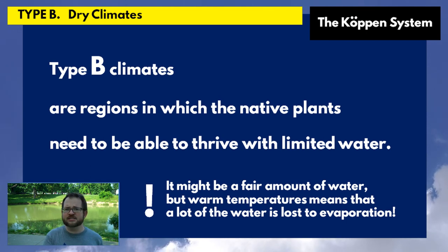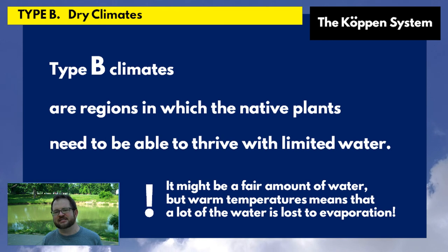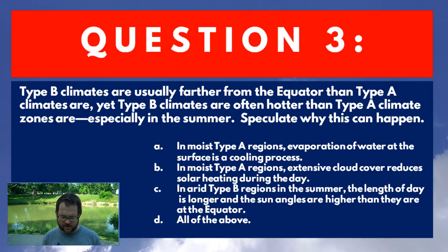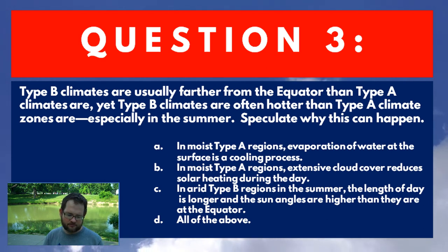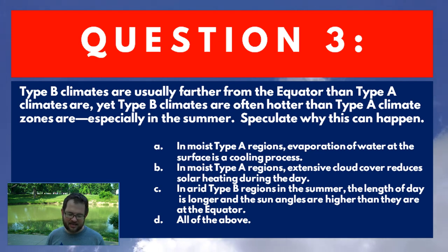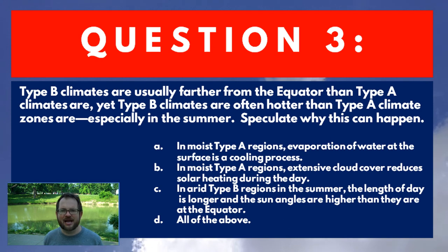Before we move on through this list of Köppen climate classifications, let me ask you a question as a little break. Type B climates are usually farther from the equator than type A climates, yet type B climates are often hotter than type A, especially in the summer. Speculate as to why that would happen.